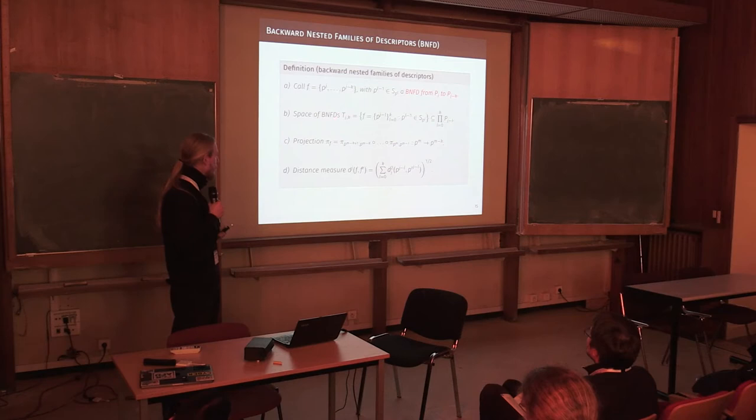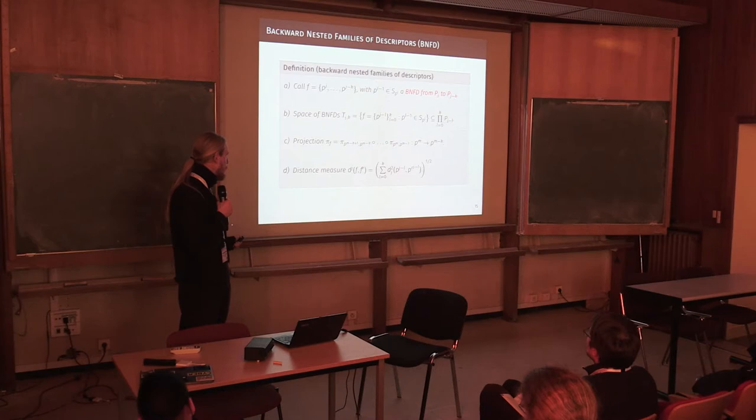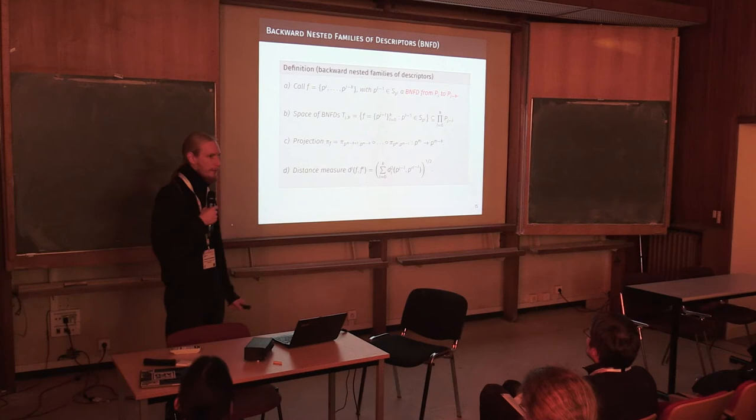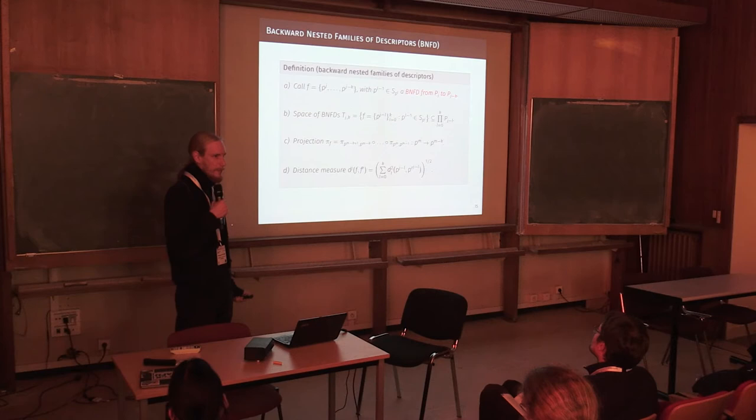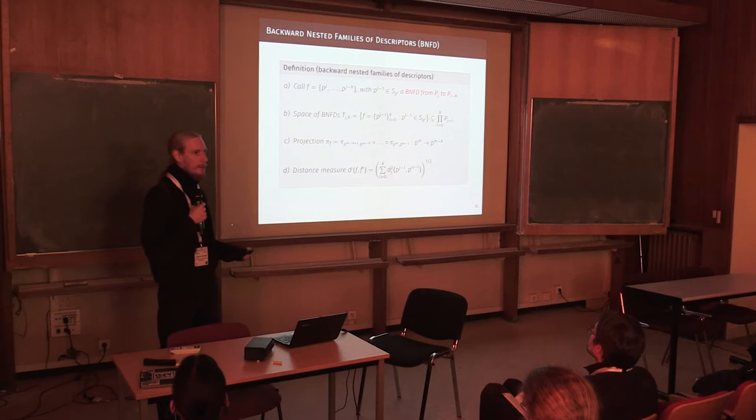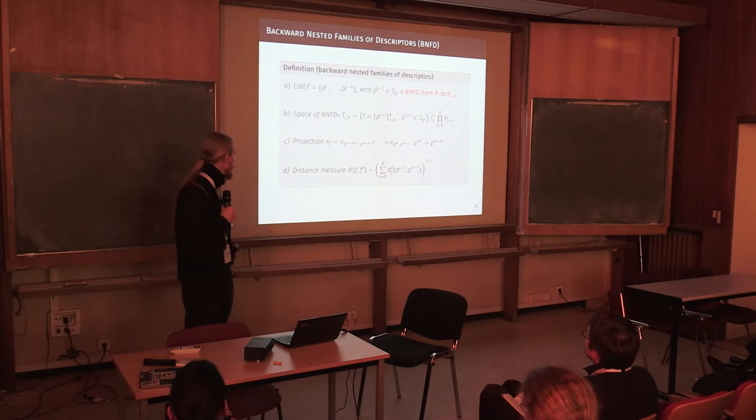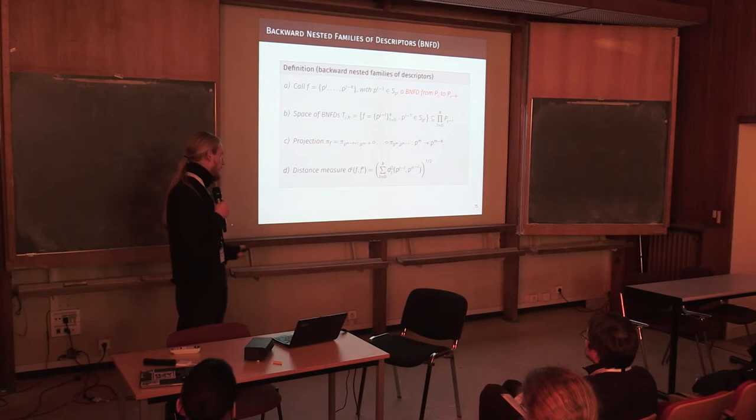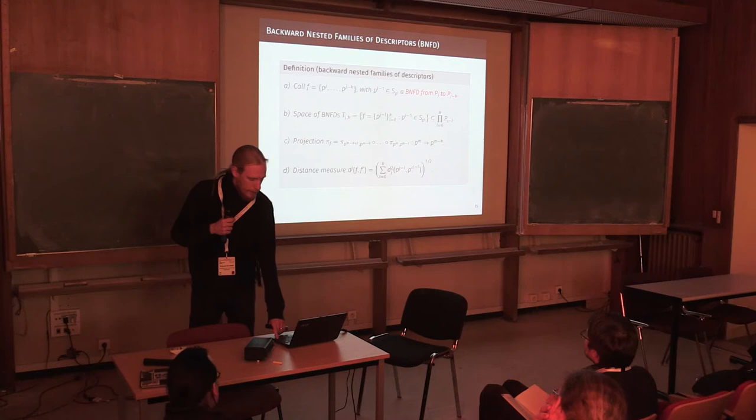So we can describe this space of backward nested families. We can do these concatenated projections along the whole family. And in fact, in principle nested spheres, it turns out this projection really only depends on the ultimate space. So all the steps in between really don't change the projection here. And we can define some overall distance measure, which is also needed for the asymptotic theory.